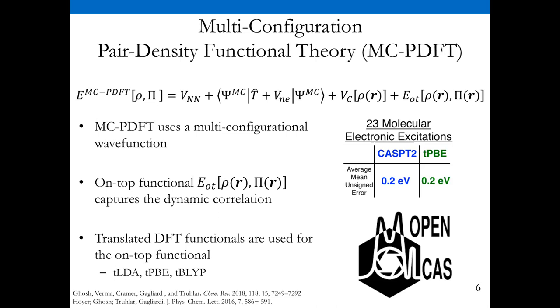This is kind of like a multi-reference DFT. Instead of using a single Slater determinant, we have a multi-configurational wave function. Instead of an exchange correlation functional, we use an on-top density functional here on the top right. This is a functional of the density and the on-top density, which is the probability of finding two electrons at a given position. This allows us to capture that dynamic correlation. We take normal Kohn-Sham DFT functionals and translate them for this MCPDFT approach, like translated TPBE, TBLIP, and so on. We've been able to get accuracy in agreement with CASPT2 but find it's computationally cheaper.